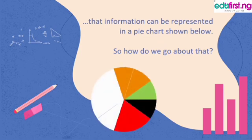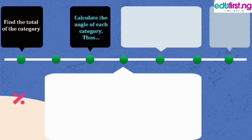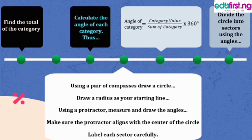So how do we represent this in a pie chart? First, we find the total of all the categories. Next, we calculate the angle of each category. The angle of a category is simply: category value divided by the sum of all categories, multiplied by 360 degrees. Once we're done with that, we divide the circle into sectors using those angles.